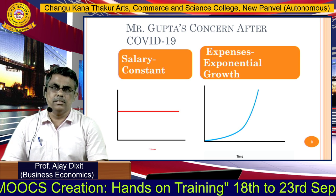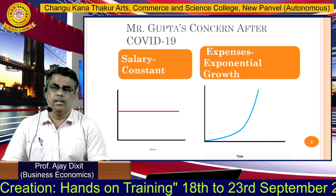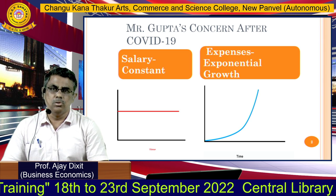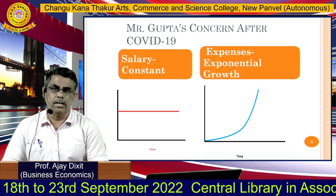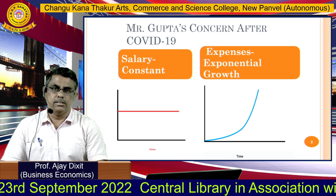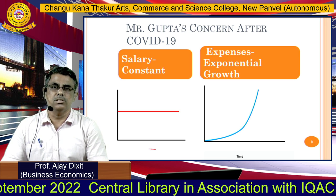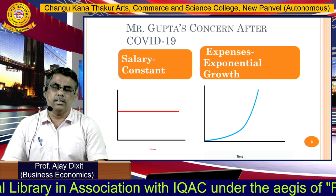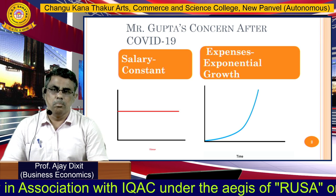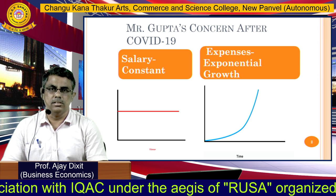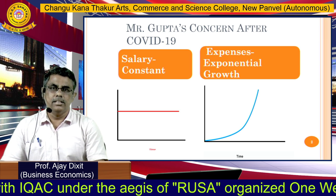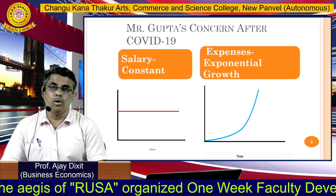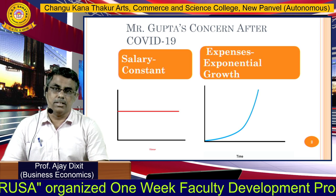Mr. Gupta's concern after COVID-19: on one hand, his salary is constant during and after COVID-19, while his expenses — his expenditure — are growing at an exponential rate. So if this situation is there, salary is constant, money coming into his house is constant, whereas his expenses are growing.